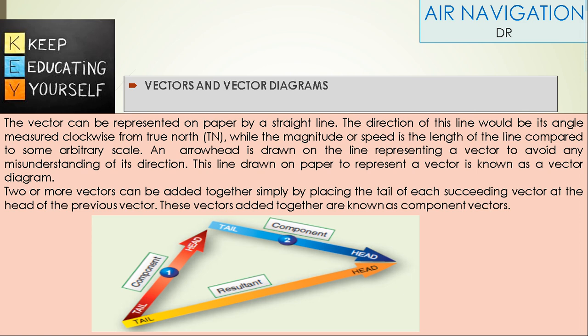Vectors can be represented on paper by a straight line. The direction of this line would be its angle measured clockwise from true north, while the magnitude or speed is the length of the line compared to some arbitrary scale. An arrowhead is drawn on the line representing a vector to avoid any misunderstanding of its direction.